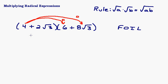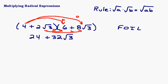4 times 6 is 24. And 4 times 8√3: the 4 and 8 are both outside the square root, so we multiply to get 32, and there's no other square root to multiply with, so we just get 32√3. Now we take 2√3 and multiply it by both terms in the second binomial — that's the Inside and Last terms. 2√3 times 6: 2 times 6 is 12, giving 12√3. Then 2√3 times 8√3: 2 times 8 is 16, and √3 times √3 gives √9, so we have 16√9.